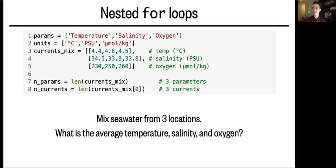Now what we're going to do is calculate the resulting seawater properties by averaging each of the properties of those three ocean currents, and we'll do that using two for loops, one nested inside the other.